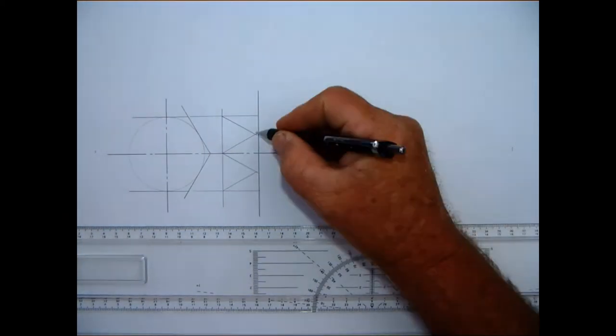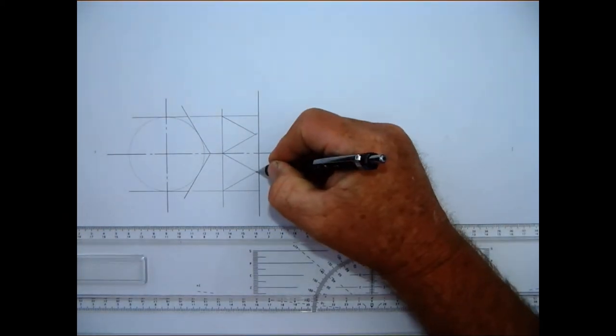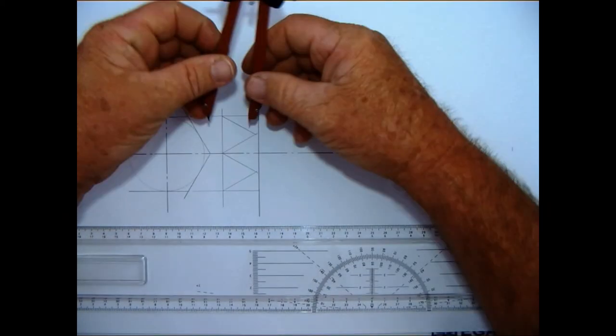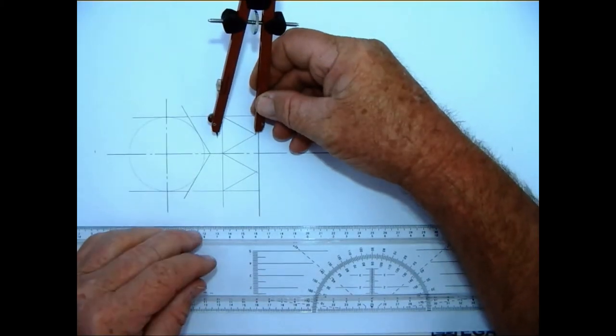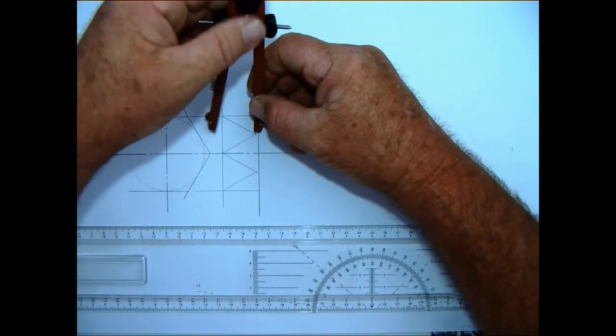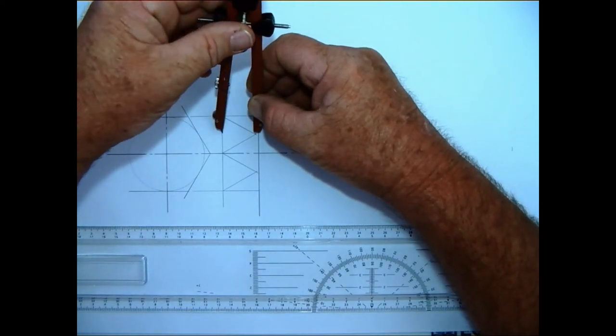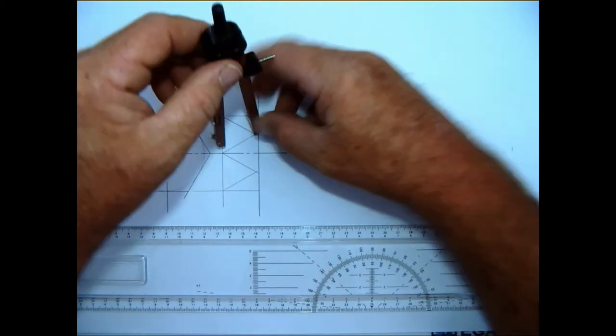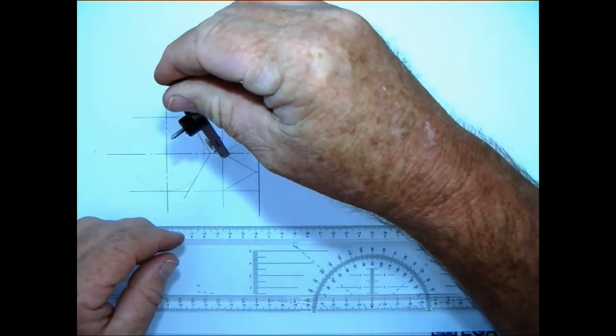Repeat that on the other side, that will give me a point there and it will give me a point there. Take my compass, put it on that point and set it so that it forms a tangent to the top line and we draw that curve.